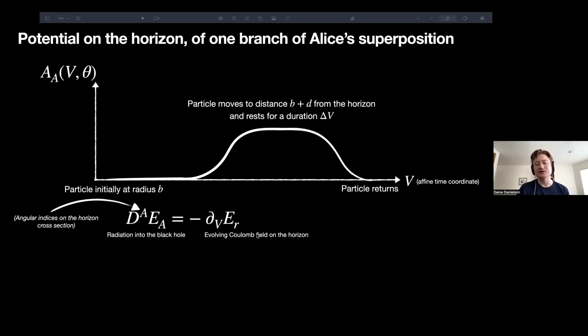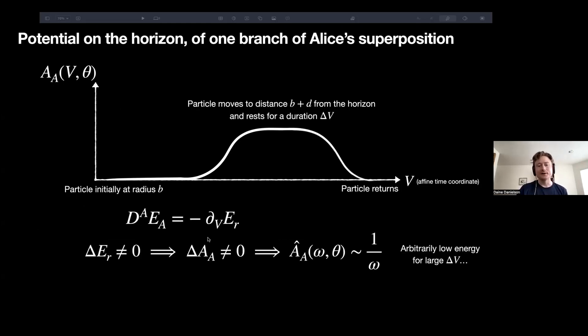And Maxwell's equation on the horizon gives this relationship between radiation propagating into the black hole and the time rate of change of the Coulomb field on the horizon. So what we find is that Coulomb fields on event horizons give rise to radiation propagating into the interior. That is, I should say, time-changing Coulomb fields on the horizon.